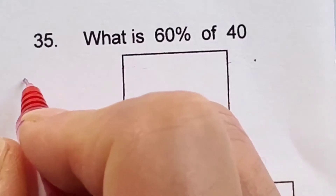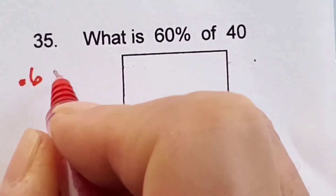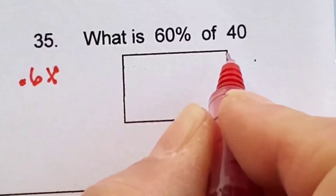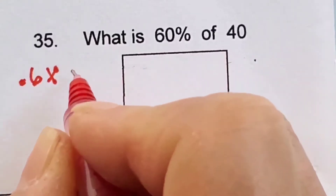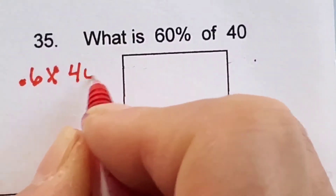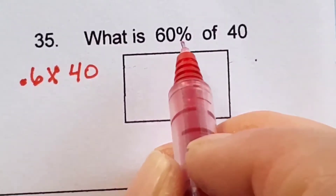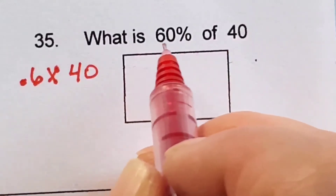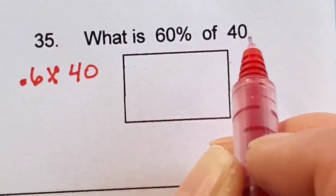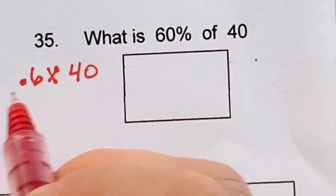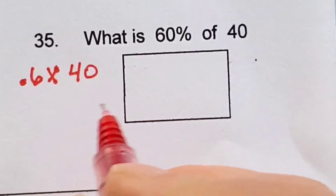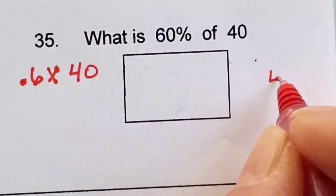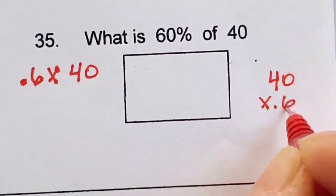I'm going to choose 0.6. 'Of' means times 40. So 60% of 40 is 0.6 times 40. Then you'll just go over on your scratch paper and write that out.